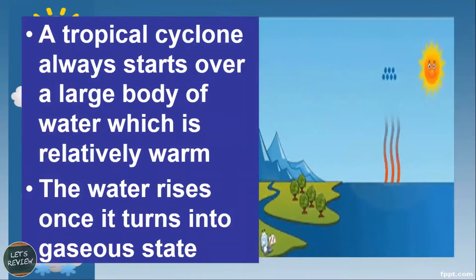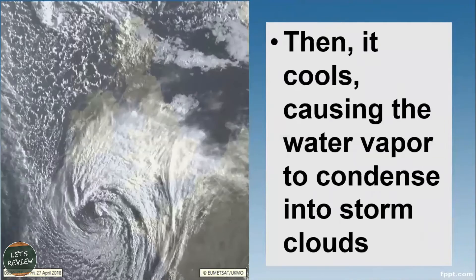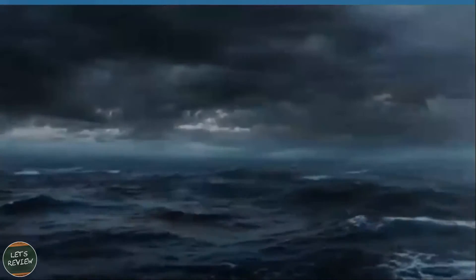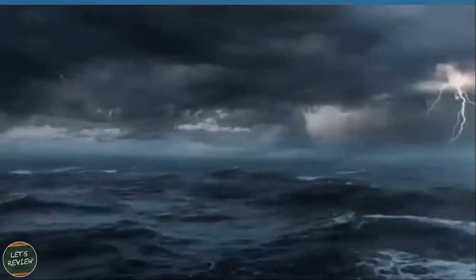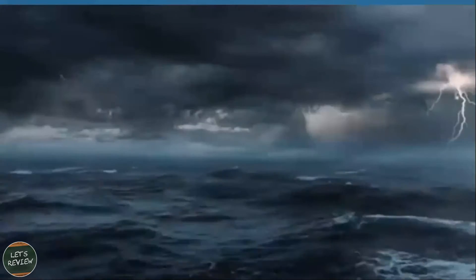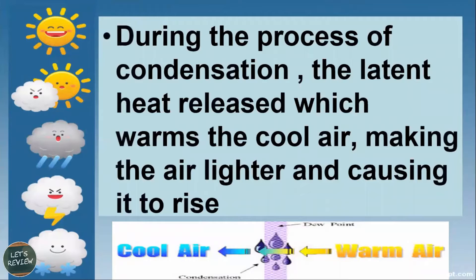The water rises once it turns into its gaseous state. When it cools down in the troposphere, it causes the water vapor to condense into a storm cloud, then continuously getting more water vapor from the surface of the bodies of water. During the process of condensation, latent heat is released, which warms the cold air.